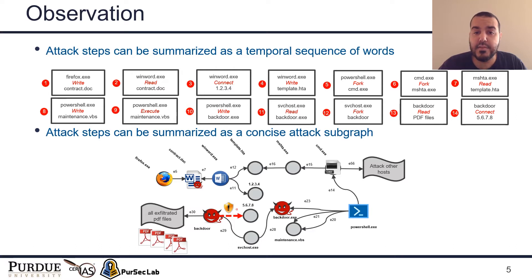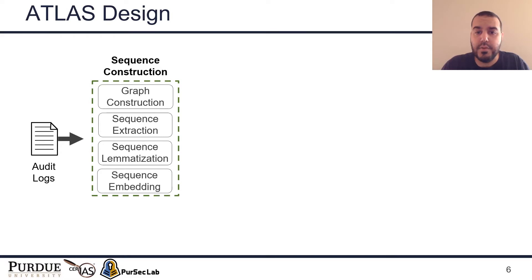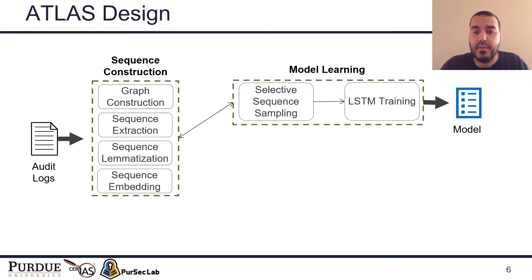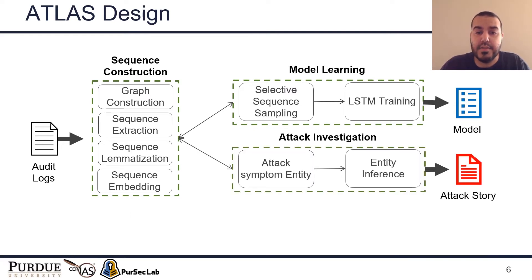To achieve this, we implemented ATLAS with four main components and two operational phases. ATLAS is a sequence-based learning framework which automatically conducts attack investigation and attack story recovery. It starts with sequence construction, where ATLAS constructs a causal graph, extracts sequences, and uses lemmatization and embedding to efficiently represent sequences to the learning model. The first operational phase is the model learning phase, where ATLAS learns attack and non-attack sequences and generates a learning model. In the attack investigation phase, ATLAS uses the initial attack symptom entity from the threat alert, extracts sequences from the causal graph, performs entity inference analysis to identify related attack entities, and then constructs a concise attack story.